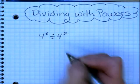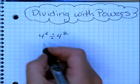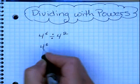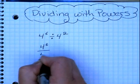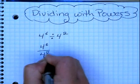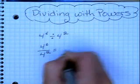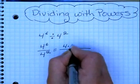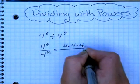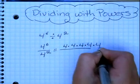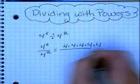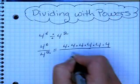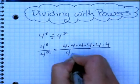Another way of showing division is by using the division bar. So if we rewrite the problem as 4 to the 6th power divided by 4 to the 2nd power, we can then look at the numerator as 4 times 4 times 4 times 4 times 4 times 4, and the denominator as 4 times 4.